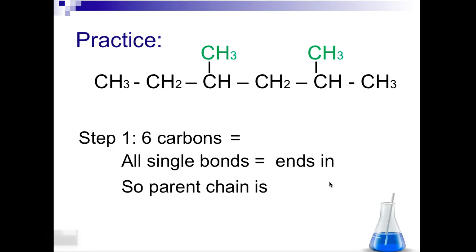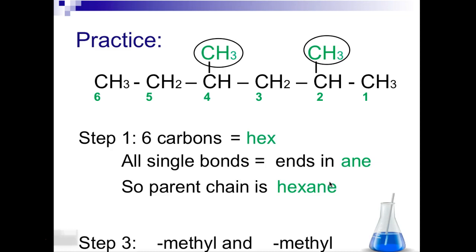So let's look at this practice. So step one is that the longest parent chain has six carbons. So that means those two are going to be methyl groups. So one, two, when we name it, it's going to be hex. They're all single bonded, so it's going to end in ane. So the parent chain is hexane.